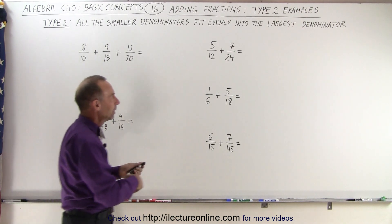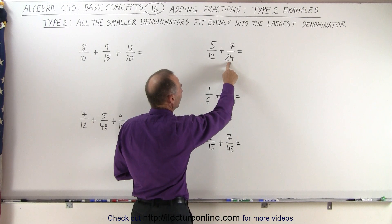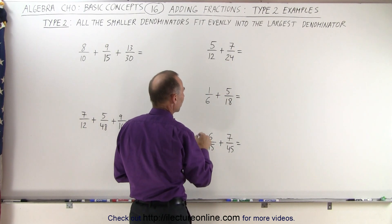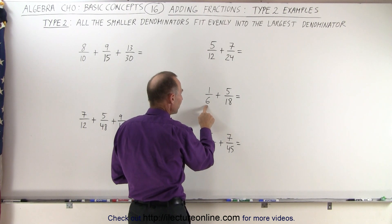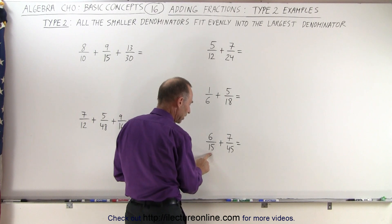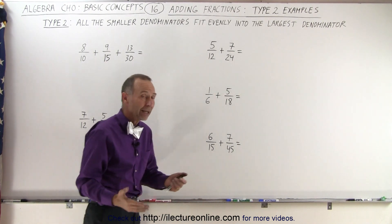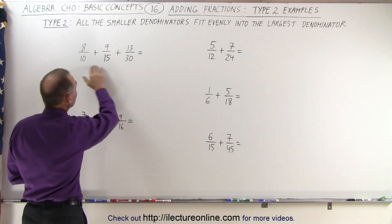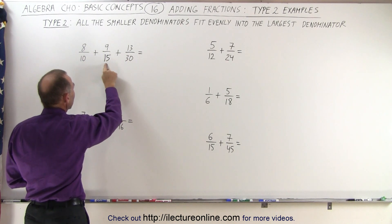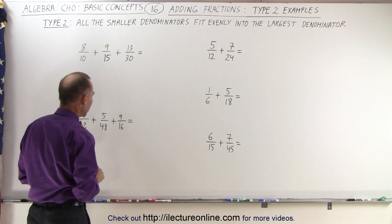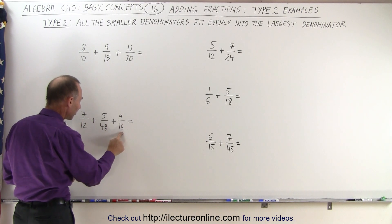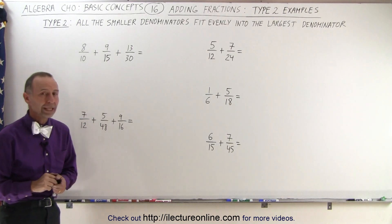For example, here the larger denominator is 24, the smallest is 12, and 12 goes evenly into 24 two times. We can see that 6 goes evenly into 18 three times, and 15 goes evenly into 45 three times. Here we have three denominators: 30 is the largest, and the other two evenly fit into it. And here 48 is the largest denominator, and both 12 and 16 fit evenly into 48.